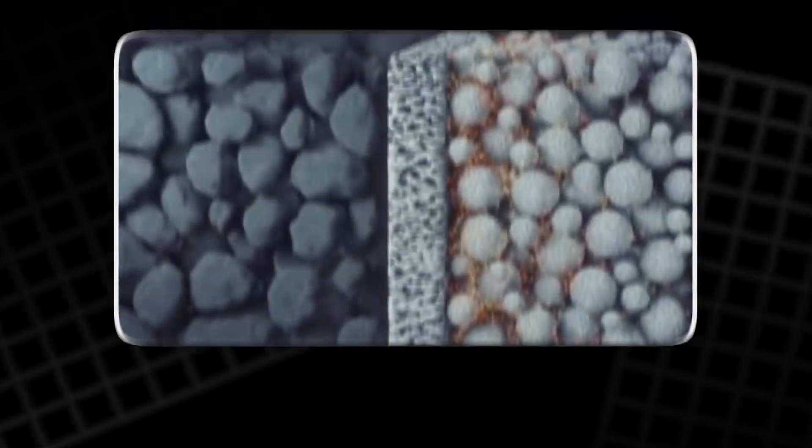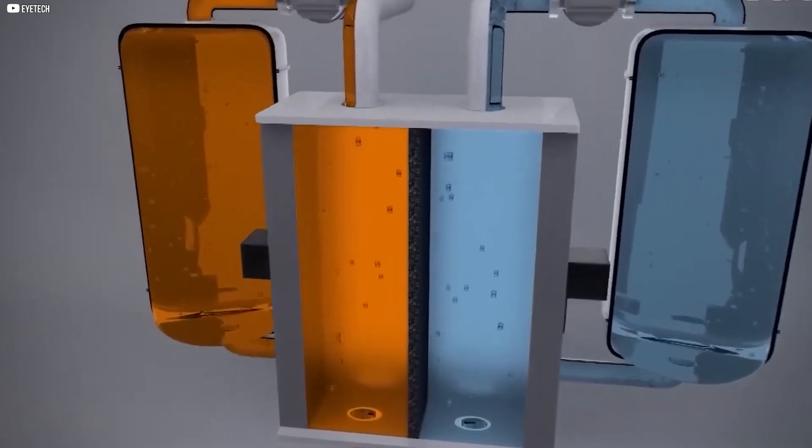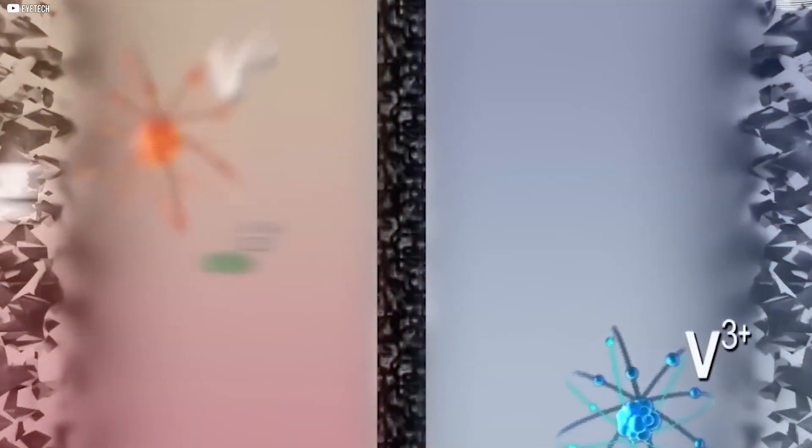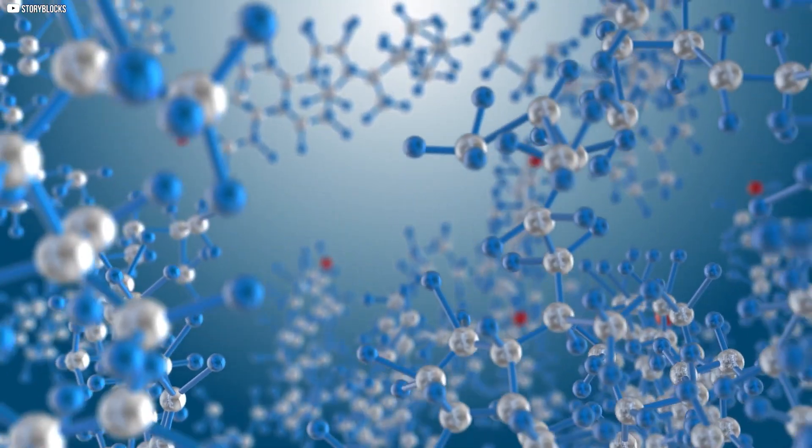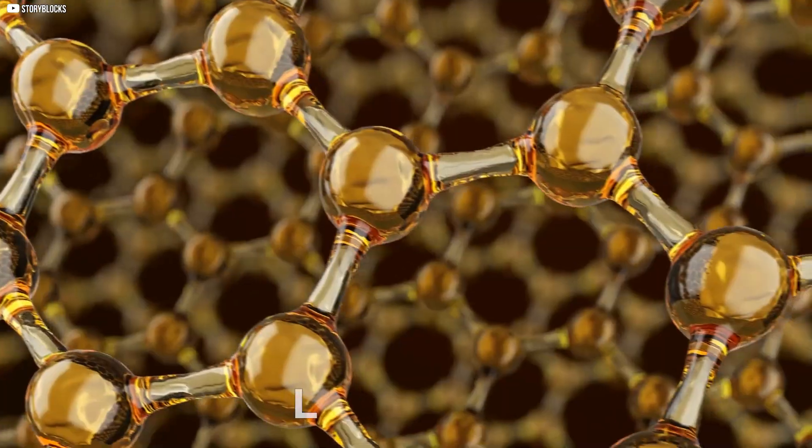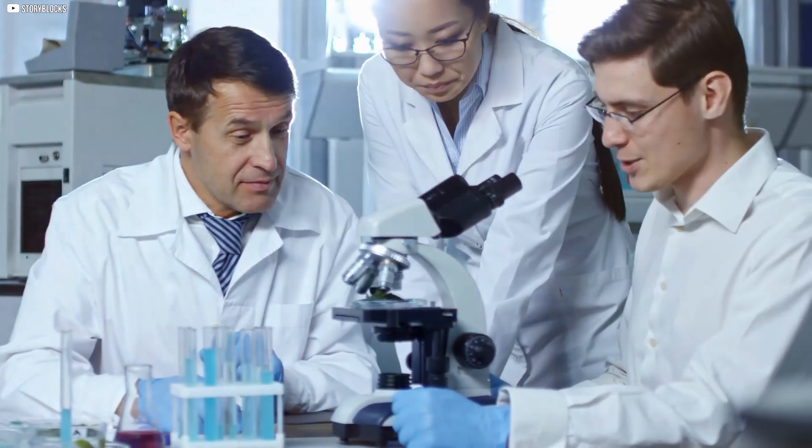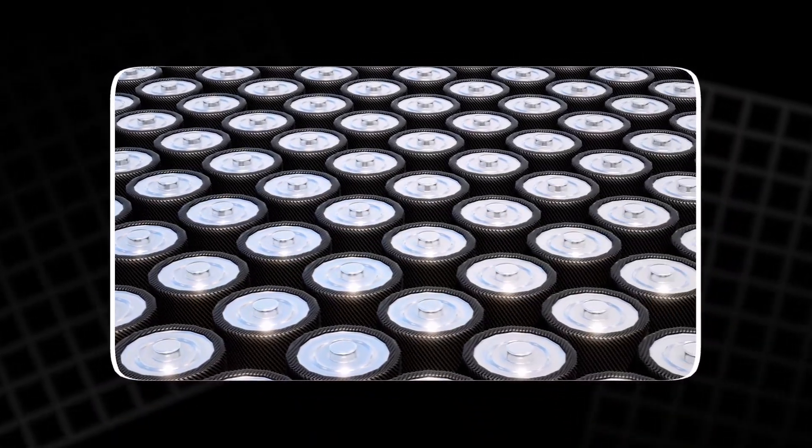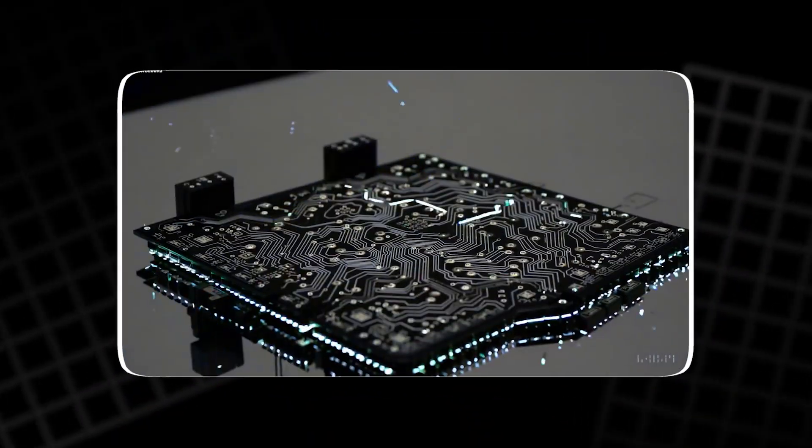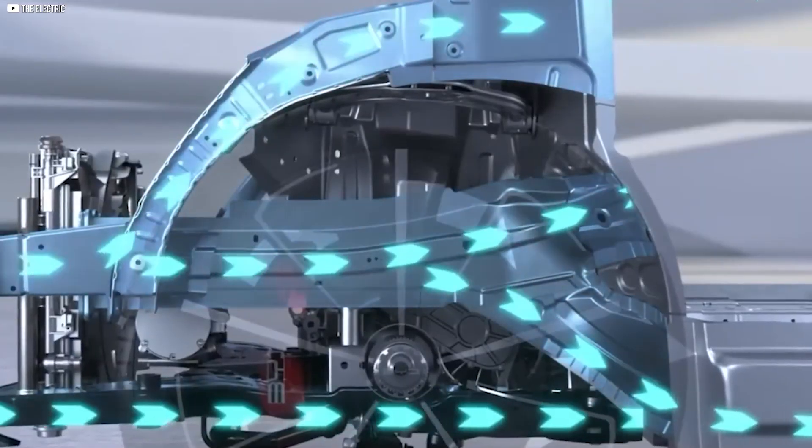This molecule could unlock trapped lithium and bring dead batteries back to life. No fancy tech, just a small compound hiding in plain sight. The AI called it lithium trifluoromethane sulfonate, LiSO2-CF3. Scientists had never seen anything like it. It worked with the battery's liquid to restore energy without causing harm. What seemed impossible, the AI solved quickly. And this is just the start.